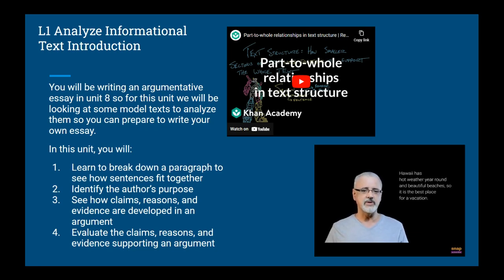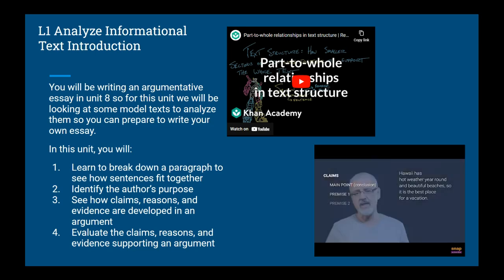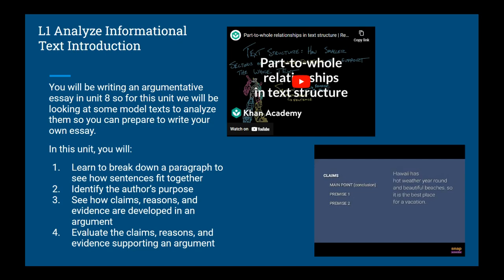Let's look at a very simple example: Hawaii has hot weather year-round and beautiful beaches, so it is the best place for a vacation. There are three claims in this argument. The main point or conclusion is that Hawaii is the best place for a vacation. Two premises support this claim: one, Hawaii has hot weather year-round, and two, Hawaii has beautiful beaches.